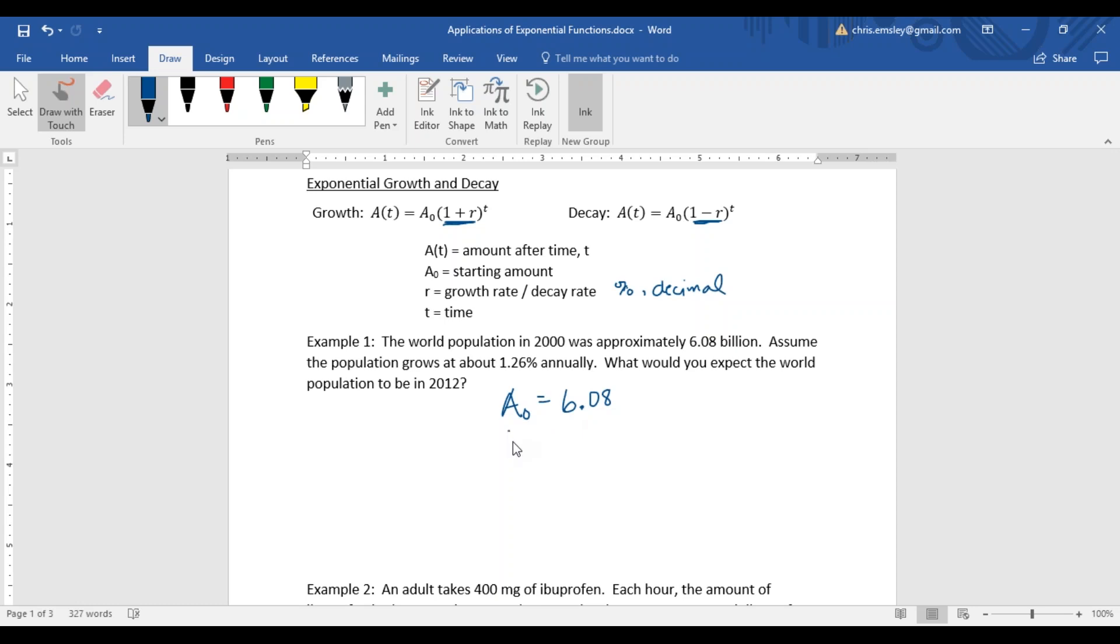We have a rate, population is increasing at 1.26% every year. In the problem we're going to use 0.0126 as the decimal. We have a time - we knew the population in 2000 and we want to calculate it in 2012, so our time is 12 years. We can plug all of those into our formula.